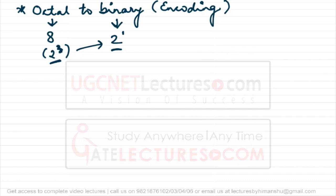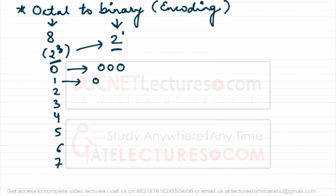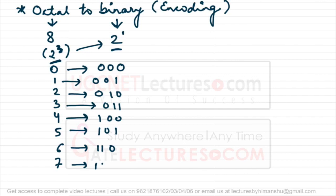The octal digits are 0 through 7. Their binary representations using 3 bits are: 0→000, 1→001, 2→010, 3→011, 4→100, 5→101, 6→110, 7→111. We use 3 bits because the largest octal digit is 7, and to represent 7 in binary we need exactly 3 digits. There is no digit larger than 7 in octal, so 3 binary digits are always sufficient.